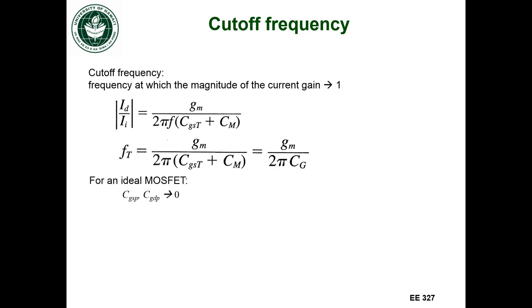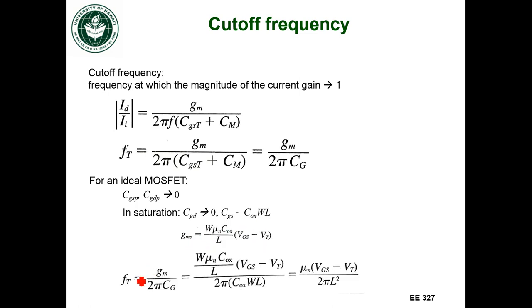Now for an ideal MOSFET, we're going to have the gate-to-source overlap capacitance and the gate-to-drain overlap capacitance goes to 0. And in saturation, I said the gate-to-drain capacitance goes to 0. The gate-to-source capacitance becomes about equal to the oxide capacitance times the width and length of the gate. So that means we also have the transconductance in saturation according to this equation. So that means we can write out what the cutoff frequency will be in saturation, assuming an ideal MOSFET. And you end up with this equation here. So you can use that to figure out what the maximum frequency that this MOSFET will work at will be.